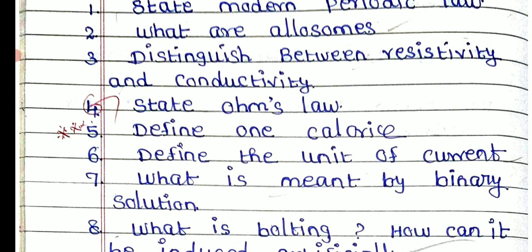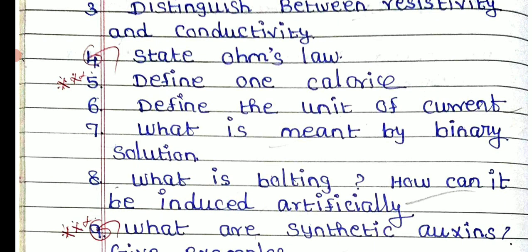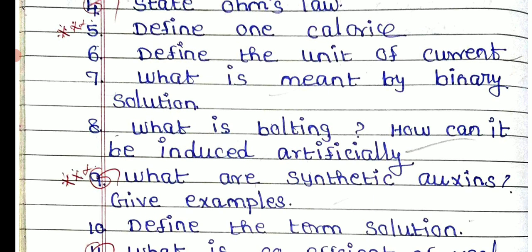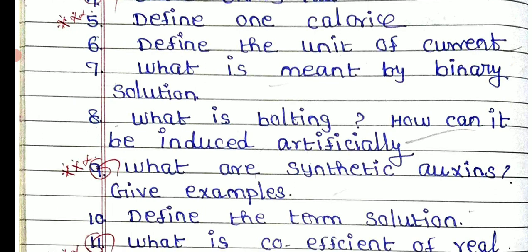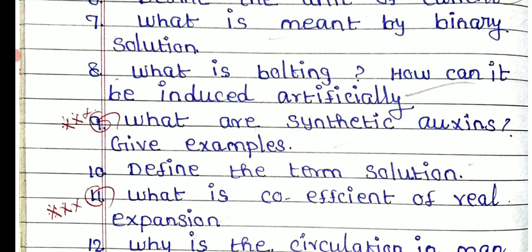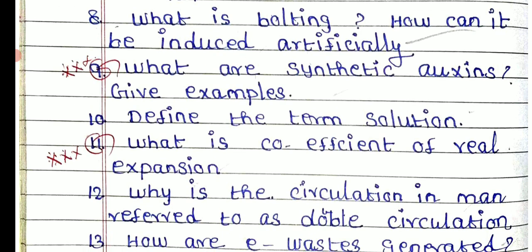Define one calorie. Define unit of current. What do you mean by the binary solution? What is bolting? How can it be induced artificially? What are the synthetic auxins — give examples. Define the term solution. What is coefficient of real expansion?